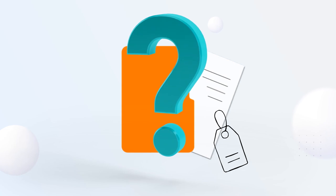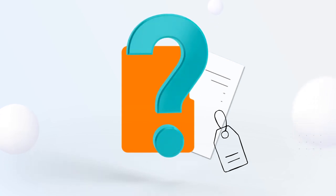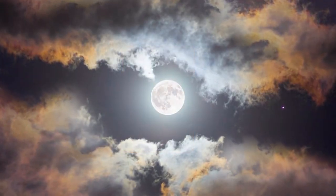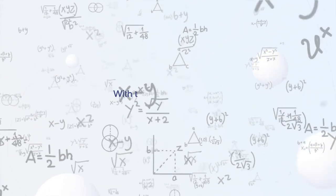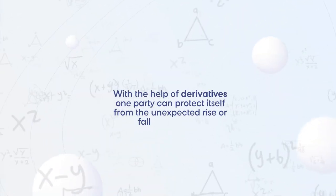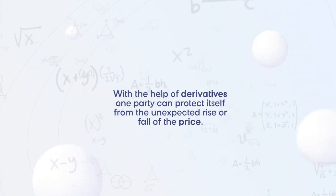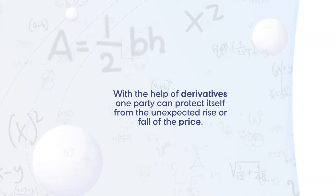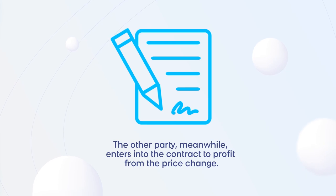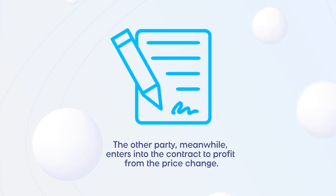What is so special about those contracts? All of them are about the future price of those assets. And no, we're not talking about divination, although there is a bit of prediction here. With the help of derivatives, one party can protect itself from the unexpected rise or fall of the price. The other party, meanwhile, enters into the contract to profit from the price change. To get a better idea of this, let's go through some of the most popular types of derivatives.